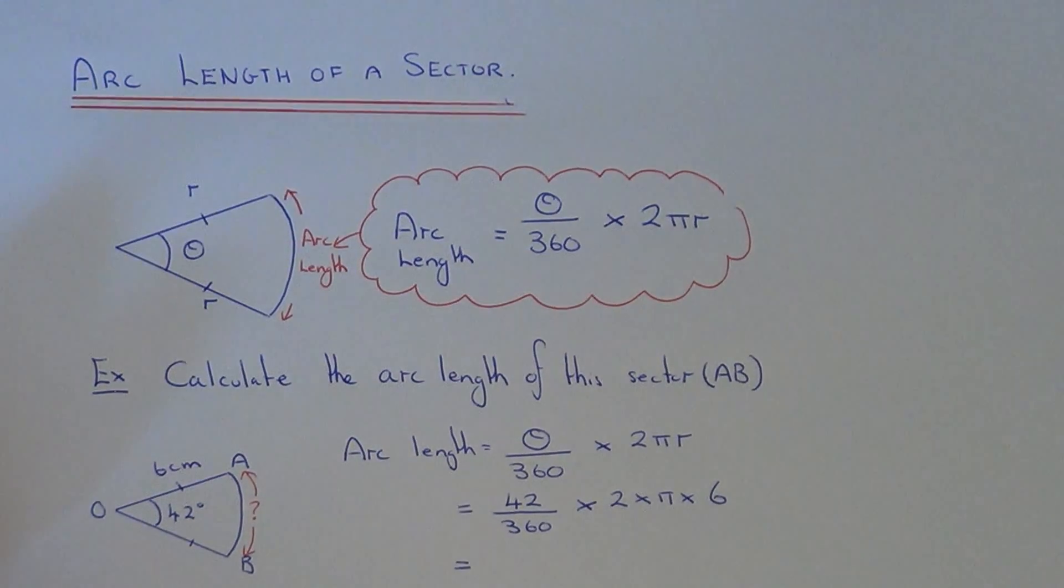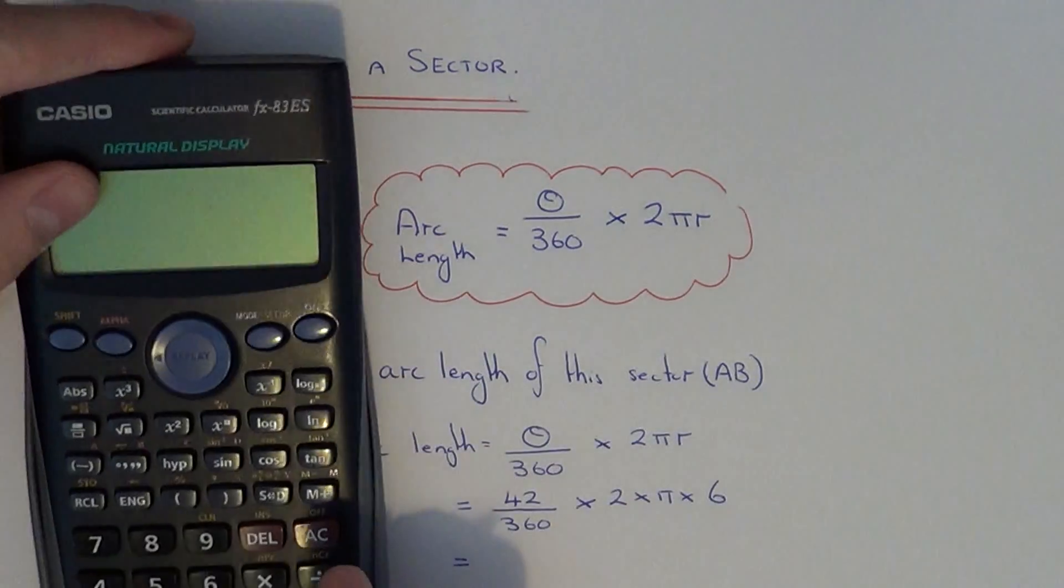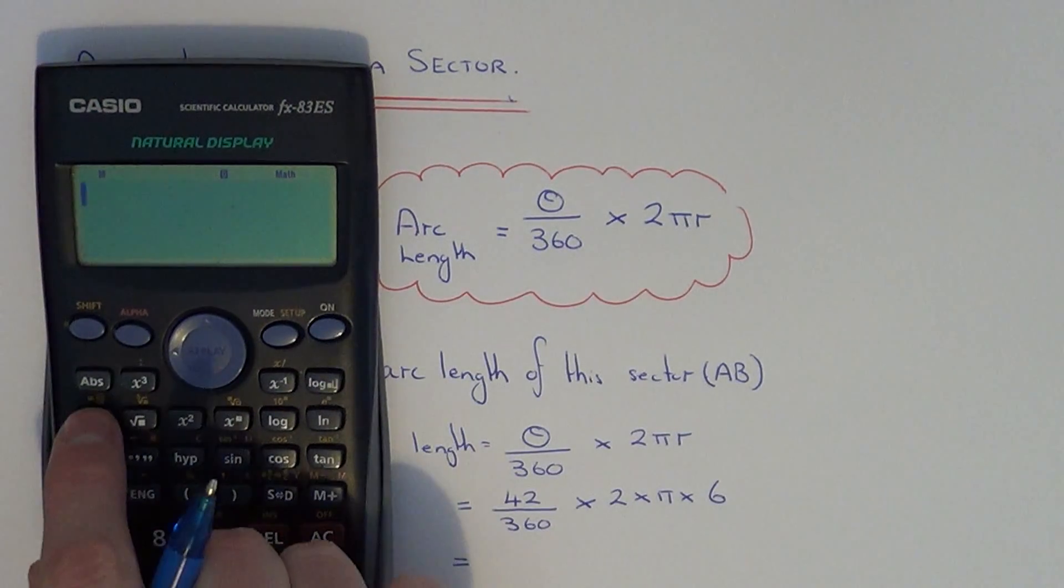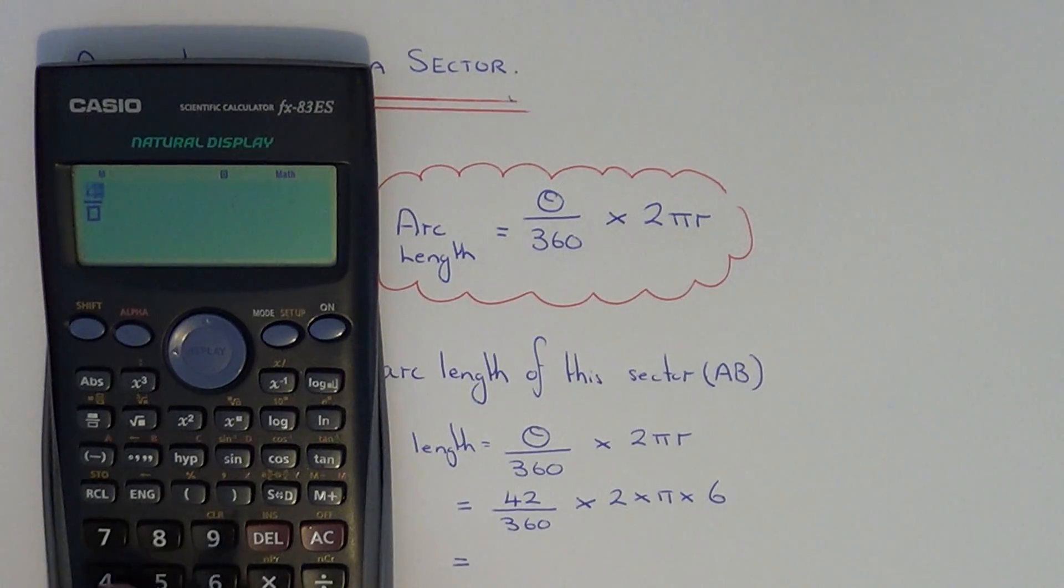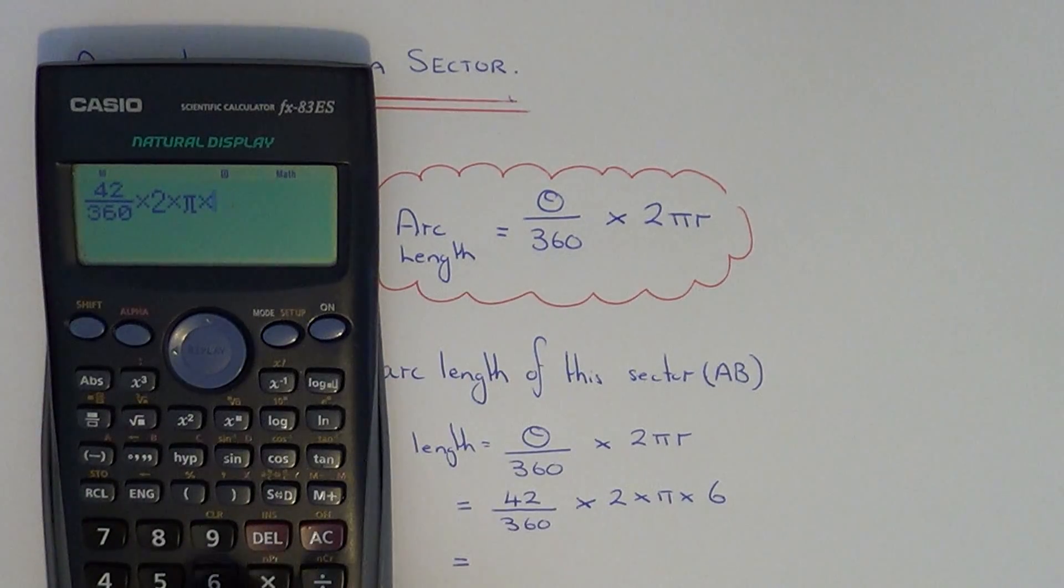So the final thing to do is just work that out on your calculator. We can do 42 divided by 360 times 2 times π times by the radius.